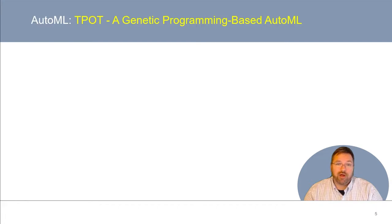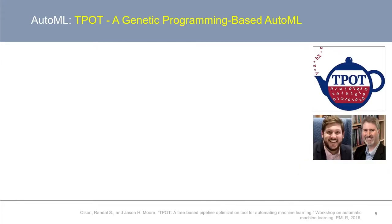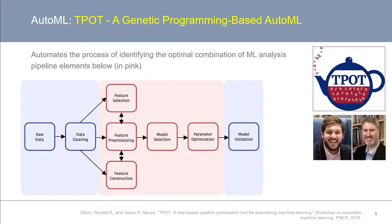The first example of AutoML I'll mention is TPOT, a genetic programming-based AutoML framework. TPOT was one of the very first open-source AutoML tools, and is to date still one of the most popular. It was primarily developed by Drs. Randall Olson and Jason Moore, and I was fortunate enough to be part of the first implementation as well. TPOT uses the evolutionary algorithm framework of genetic programming to discover and evaluate candidate machine learning pipelines as individuals of an evolving population — recall from part 8 of this series, we previously introduced evolutionary algorithms as one element of rule-based machine learning methods.